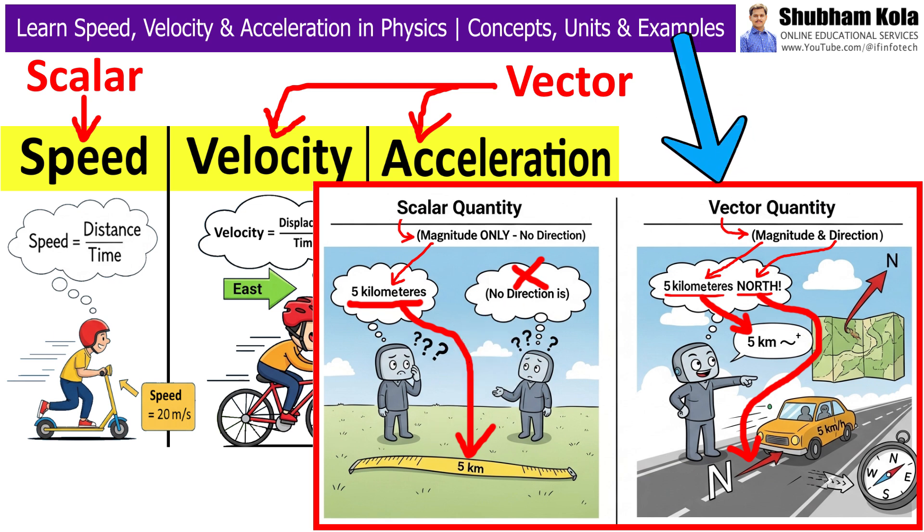A vector quantity has both magnitude and direction. If I say the car is moving 5 km north, now you know how much it is and where it's going. So, remember this, direction is what makes something a vector.